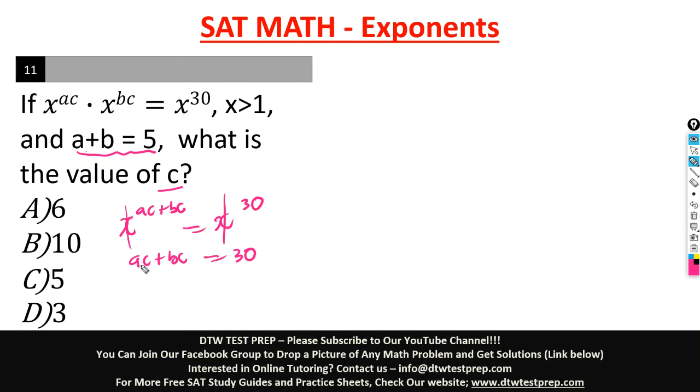From here I can factor out c. C is here and here, so factor out c by bringing it out. You have c, and what you're left with is a plus b equal to 30. Remember, a plus b is 5. You can see how simple this is now. A plus b is 5, so this becomes 5.